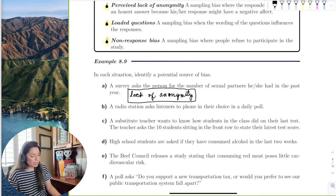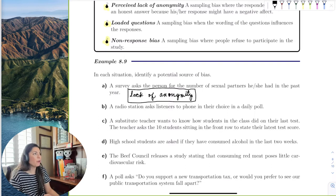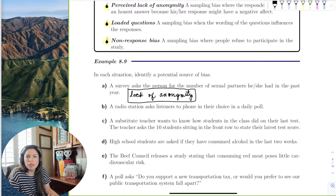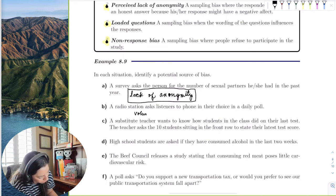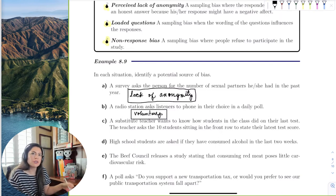A radio station asks listeners to phone in their choice in a daily poll. Is everyone going to call in, the entire world listening to the radio? No. Who would call in? The people who want to volunteer. That's what they say when they do take the poll—they say 'our listeners'—because they're specifically targeting their listeners as the population.